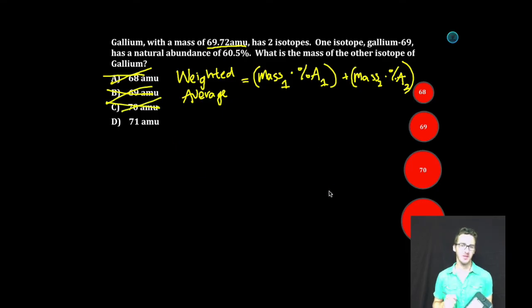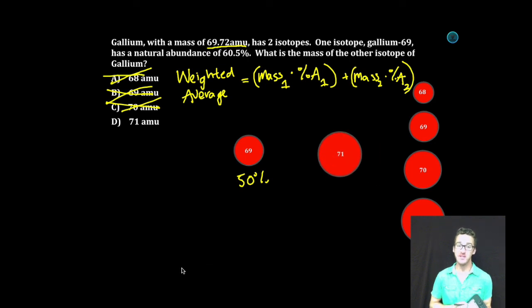And that brings us to our last option. By default, it's going to be answer D. But let's talk about why. Again, the mass of that first isotope is going to be 69 amu. Once again, let's pretend its percent abundance is 50%. If the second isotope has a mass of 71 amu, also at 50% abundance,